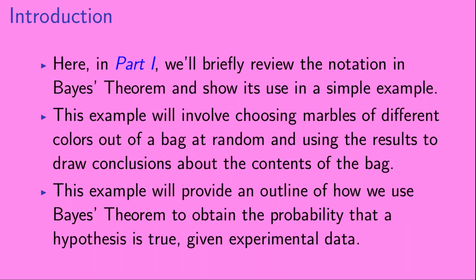Here, in Part 1, we'll briefly review the notation in Bayes' Theorem and show its use in a simple example. This example will involve choosing marbles of different colors out of a bag at random, and using the results to draw conclusions about the contents of the bag. This example will provide an outline of how we use Bayes' Theorem to obtain the probability that a hypothesis is true, given experimental data.